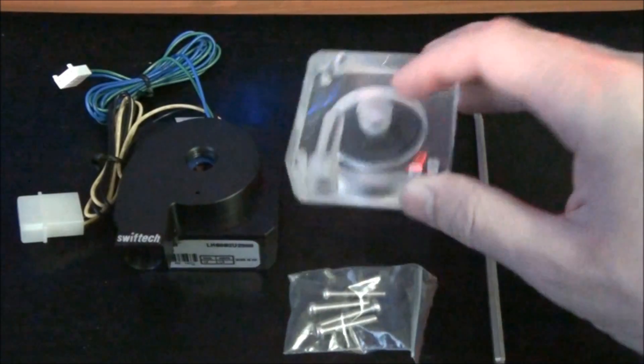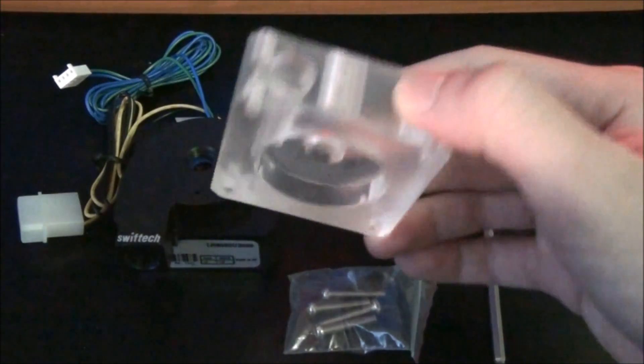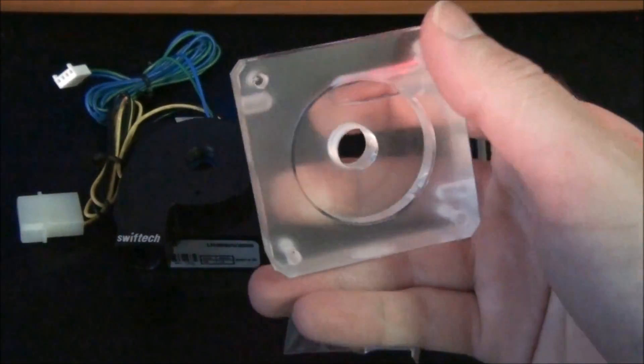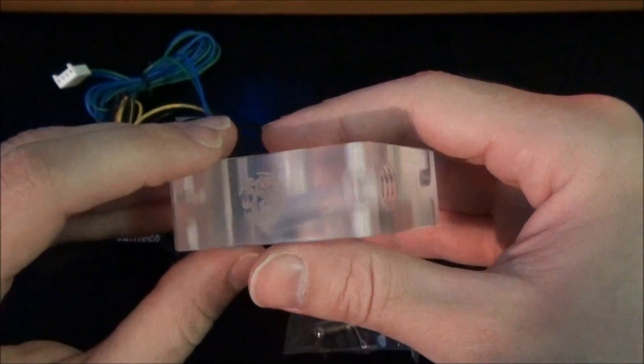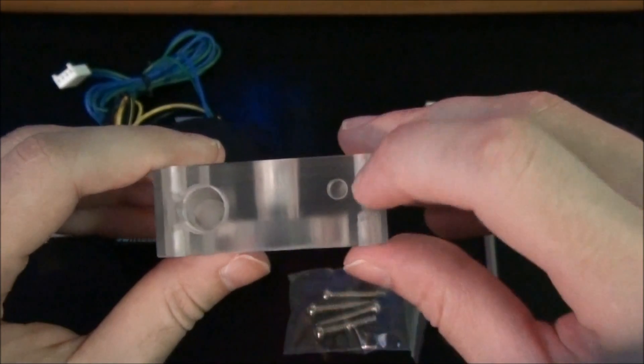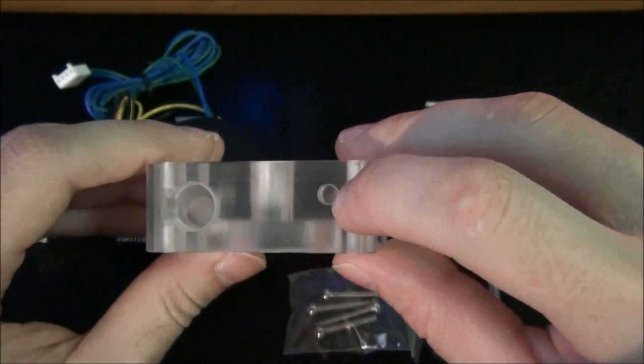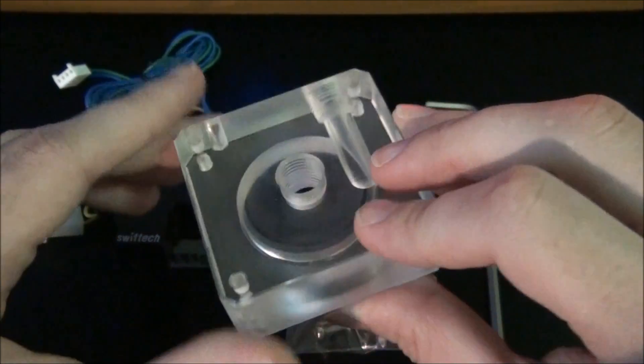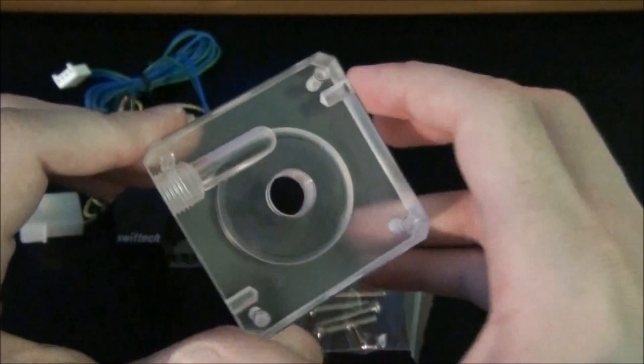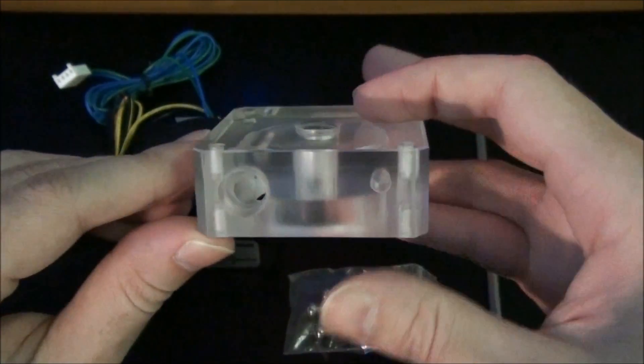So here I have a Bits Power clear acrylic pump top, very nice looking pump top. It's got some LED holes for 5mm LEDs, one in the front and also one in the back. It's got G1 1/4 inch threads, one on the top and one at the front.